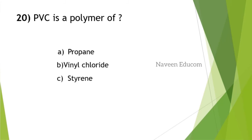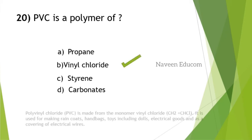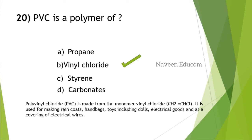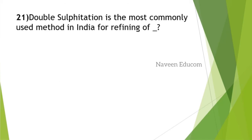PVC is a polymer of what? From the explanation itself, PVC is polyvinyl chloride. You study this in polymer chemistry in 12th standard NCERT. Polyvinyl chloride is made from the monomer vinyl chloride, CH2=CHCl. It is used for making raincoats, handbags, toys including dolls, electric goods, and as a covering of electric wires.